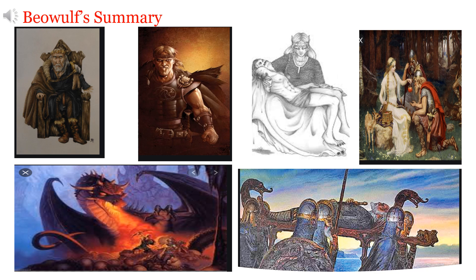The story starts with King Hrothgar, then ends with Beowulf's death and Wigglop becoming king. The story is divided into three battles. I hope you better understood the story as we discussed this Beowulf summary and incorporated it to the nine dimensions or behavioral patterns.